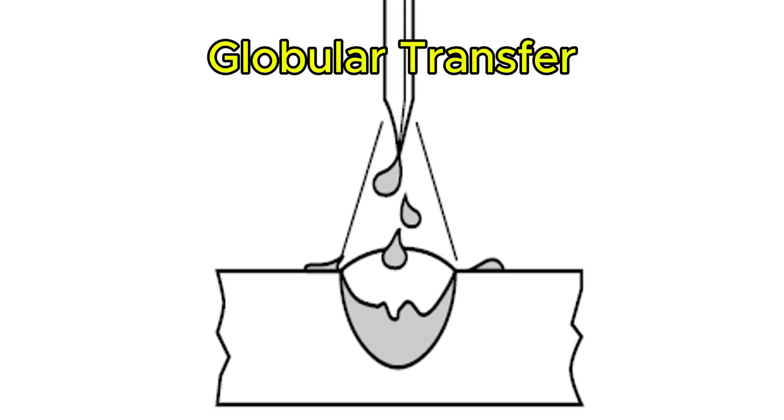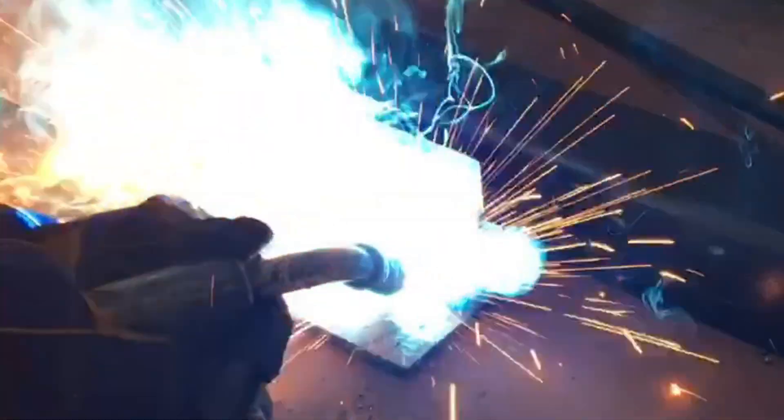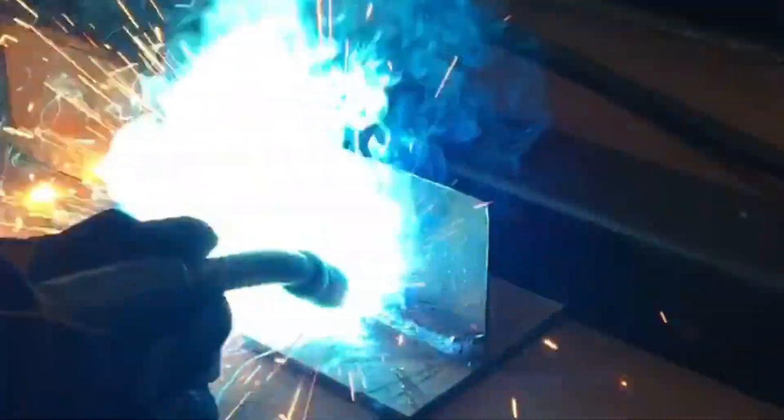Moving on to globular transfer. Globular transfer occurs at higher current levels than short-circuit. Instead of tiny shorts, large metal droplets, or globs, form at the end of the wire and are pulled down into the puddle by gravity. These globs are large and often irregular. They don't always fall perfectly, leading to significant amounts of spatter that can even fuse to the base metal, making cleanup even tougher. The transition current from short-circuit to globular isn't a specific number — it's a range.